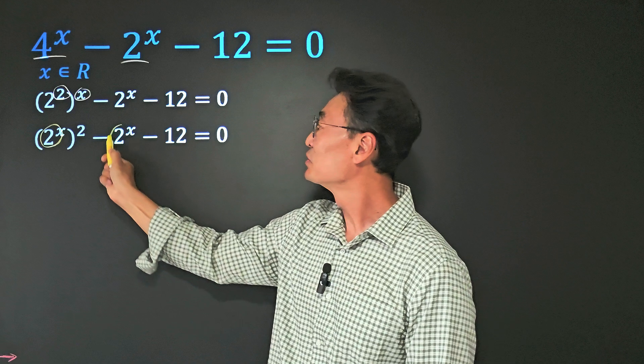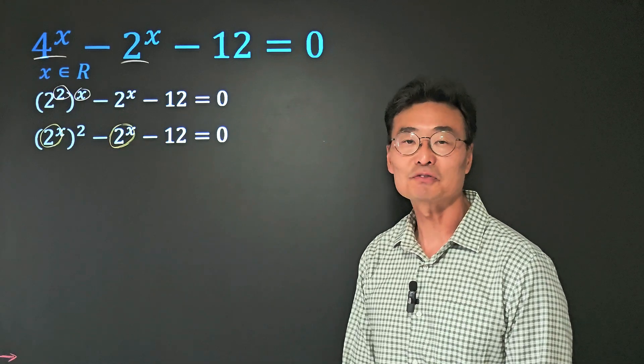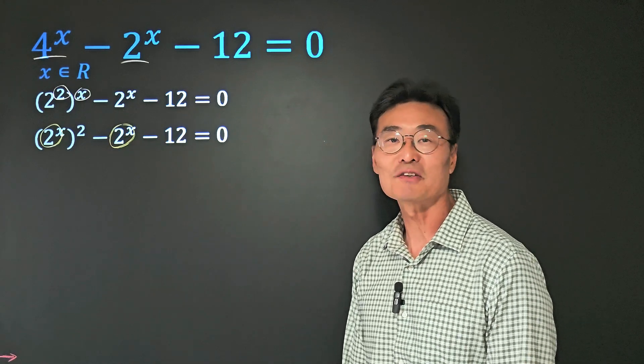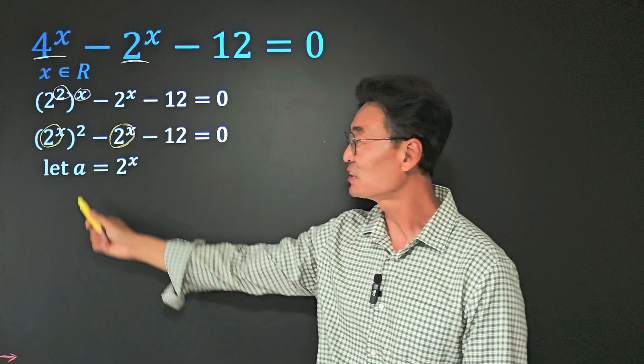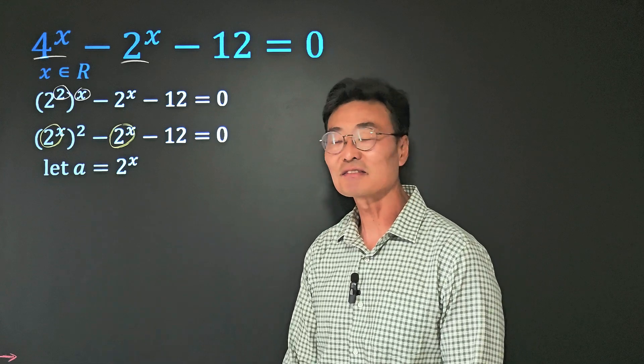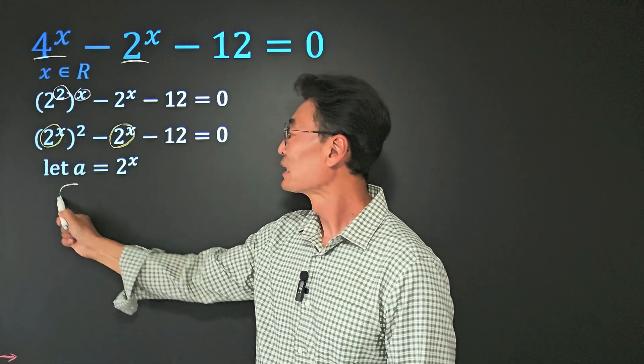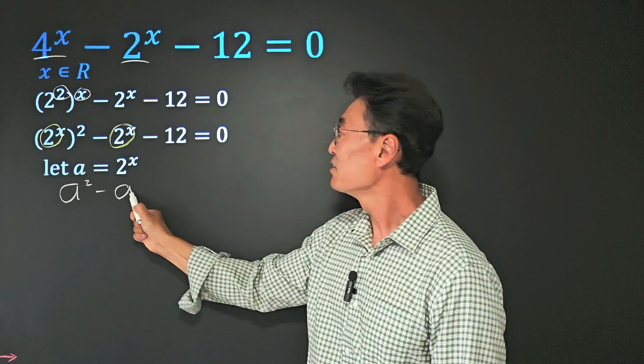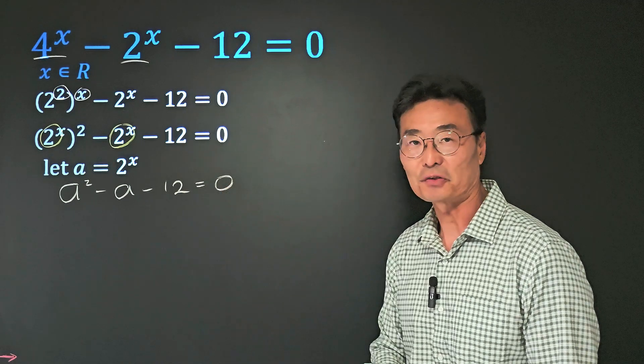Notice that we have 2^x here and 2^x here, so we're actually able to factor this. However, I like to substitute a value such as a for 2^x, making it into a^2 - a - 12 = 0.